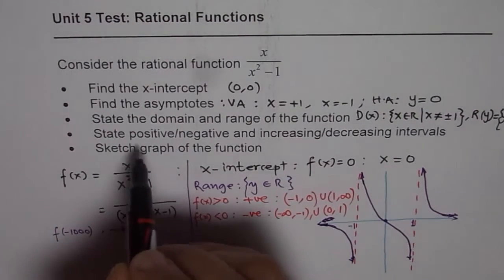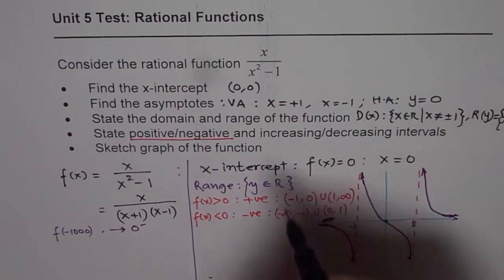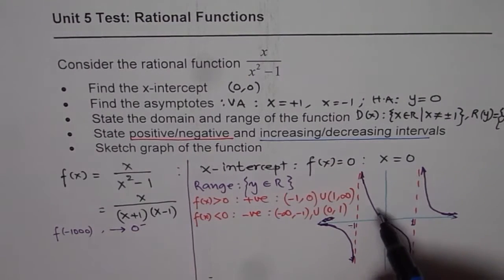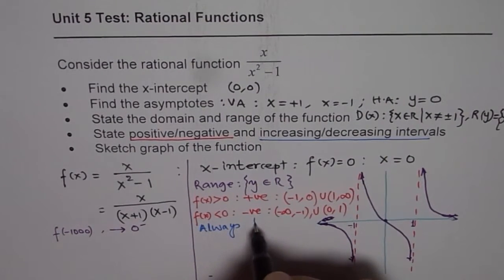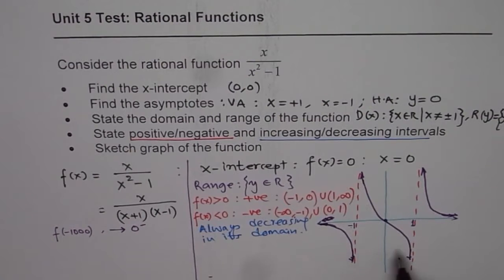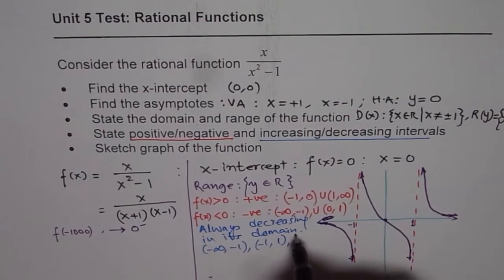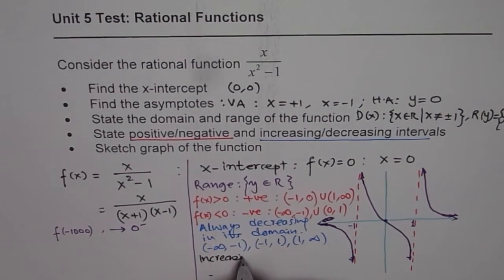Now for increasing and decreasing intervals. Increasing means the function goes higher; decreasing means lower. From the graph, the function is always decreasing throughout its domain: from minus infinity to minus 1, from minus 1 to plus 1, and from 1 to infinity. It is decreasing on each interval of its domain and never increasing.